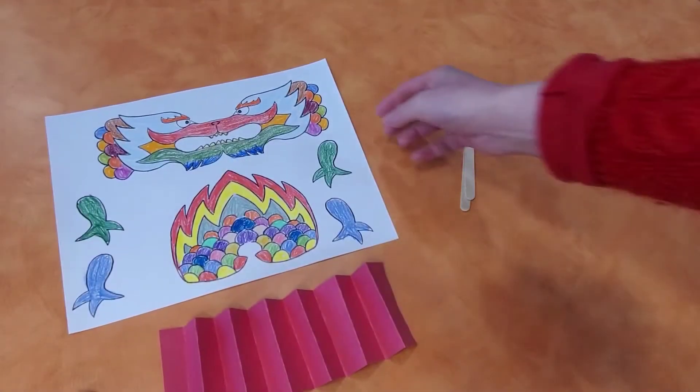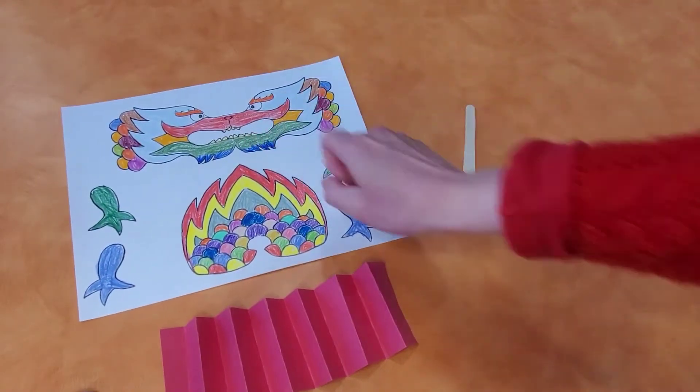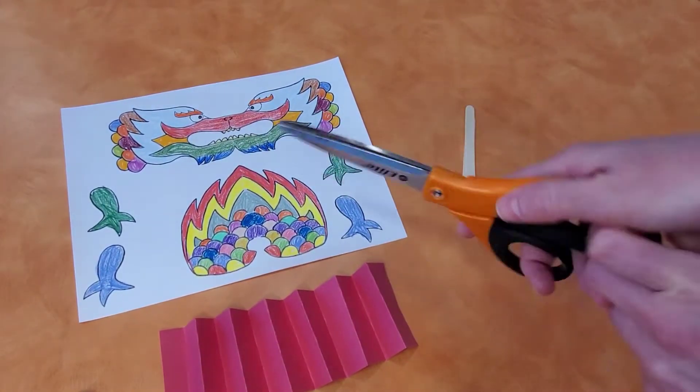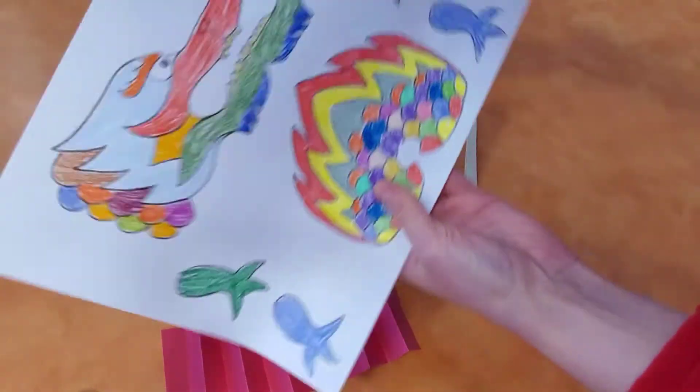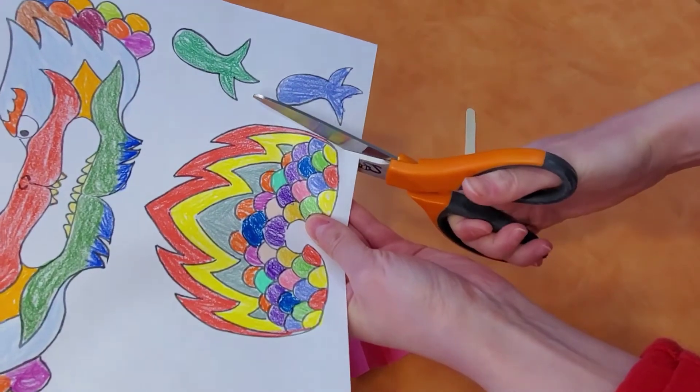Once you have colored the dragon pieces, you're going to want to cut it out. So using scissors, you're gonna cut along the black outlines.